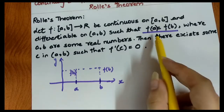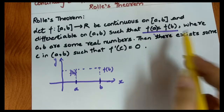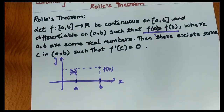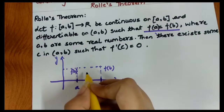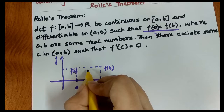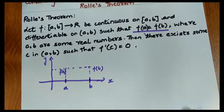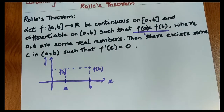If our function of a and function of b are equal, then there must exist a point c in (a, b) where its derivative is zero. Now, how do we determine continuity? Continuity means there is no break point in the graph.